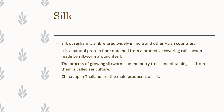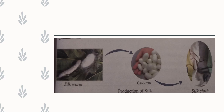The silkworms feed on mulberry leaves. That is why the process of growing silkworms on mulberry trees and obtaining silk from them is called sericulture — 'seri' for silkworm and 'culture' means growing. China, Japan, and Thailand are the main producers of silk in the world. In this diagram, we can see the silkworm feeding on mulberry leaves, and the white ball-like structures called cocoons, from which silk is obtained and used for making different kinds of clothes.